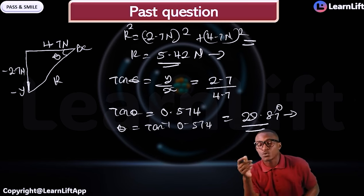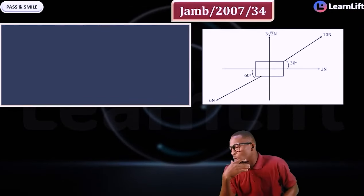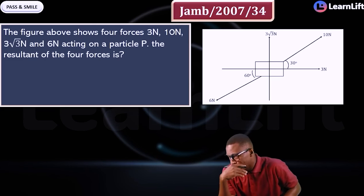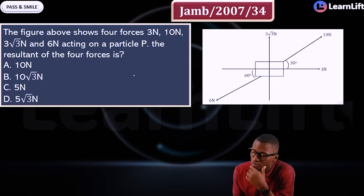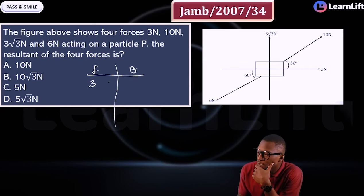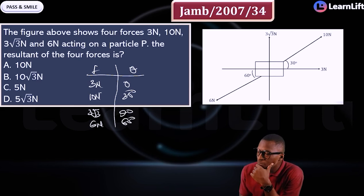Very simple. Now you understand how to resolve into vertical and horizontal components. Let's take one more past question — JAMB 2007. Four forces act on point P: 3 N, 10 N, 3√3 N, and 6 N. We need the resultant. Let's set up our table: F1 = 3 N at 0°, F2 = 10 N at 30°, F3 = 3√3 N at 90°, F4 = 6 N at 61°.